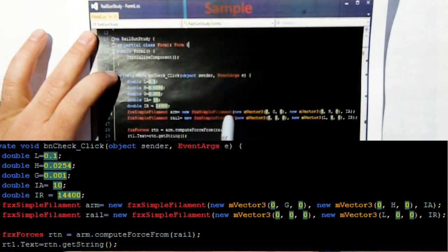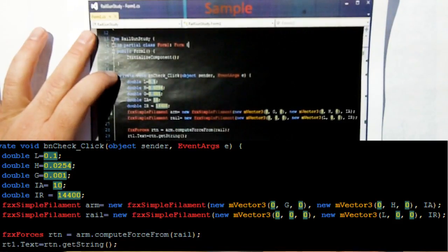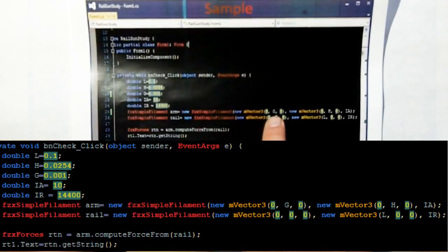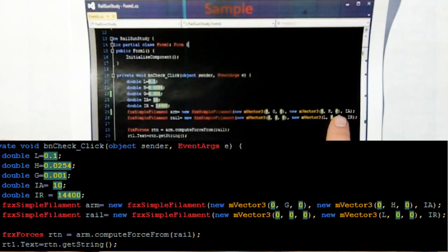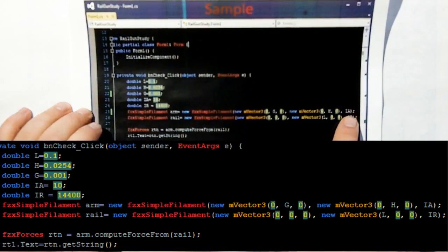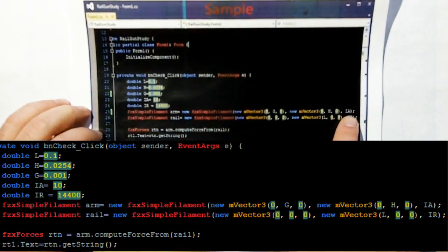These are the variables going in. There's a simple filament class that you instantiate for the armature, and the armature goes from 0,G,0 to 0,H,0, so it's just a simple line that goes in Y at X equals 0 and Z equals 0, from Y equals G to H, and the current in that loop is the armature current which we're using 10 amps.